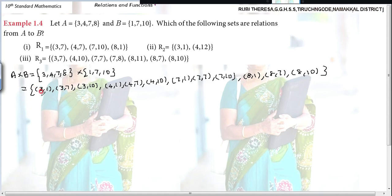So you found out A cross B. First subdivision. What is given? R equal to 3,7, 4,7, 7,10, 8,1. Just to recall only you are writing this. You see the pairs, whether it is a subset of these elements, whether it belongs to A cross B.